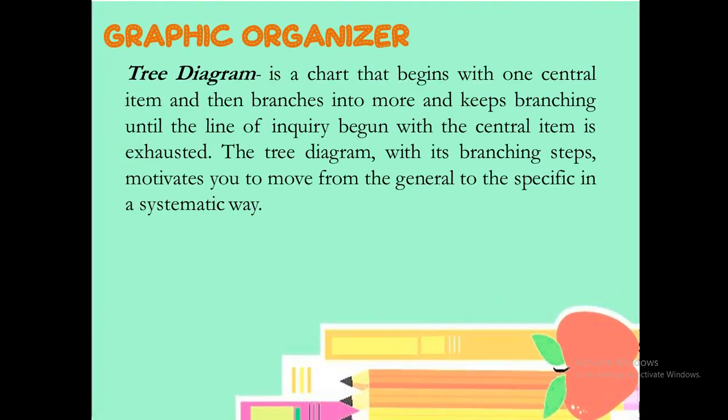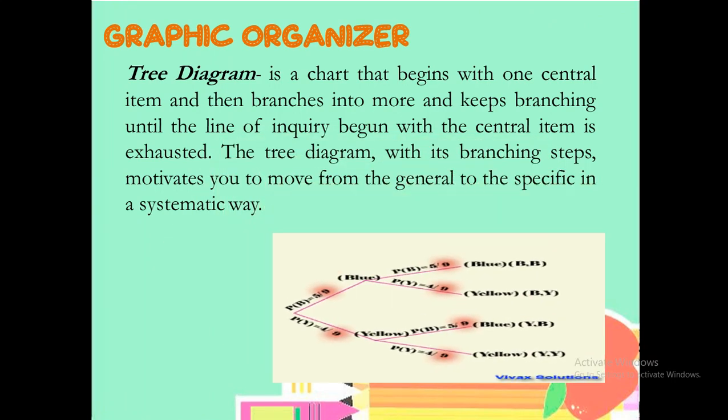For the continuation, the tree diagram, quoted from the name itself, is a chart that begins with one central item and then branches into more and keeps branching until the line of inquiry began with the central item. The tree diagram is exhausted. The tree diagram, which is branching steps, motivates you to move from general to specific in a systematic way. They lifted this tree diagram because you continue to branch out from the general idea branching to the succeeding idea of your context. It is also similar a bit in the concept map, but the difference would be on how you structure them. In concept map, you can use circle, but in the tree diagram, perhaps you can use a root type because it seems to be a branch. It seems to be a stem or it seems to be a root of a tree or a plant. That's why they associated the term tree diagram.